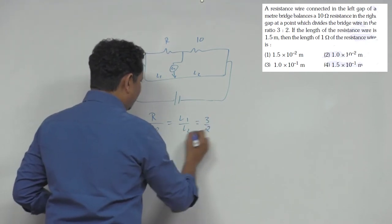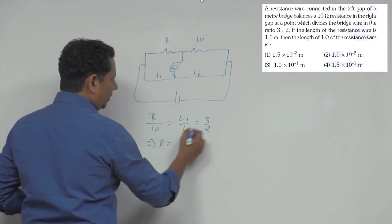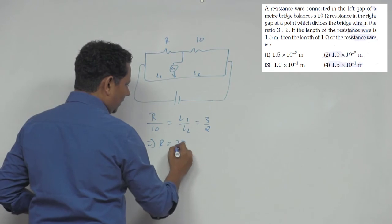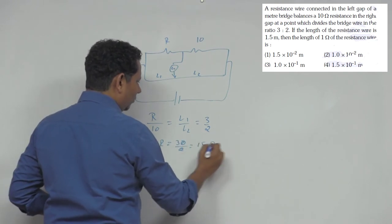So this is 3 by 2, which implies R ki value that will be equal to 30 divided by 2, that will be equal to 15 ohm.